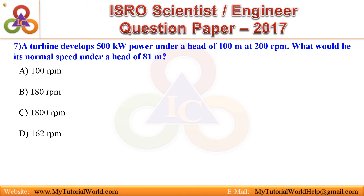Question 7. A turbine develops 500 kilowatts power under a head of 100 meters at 200 rpm. What would be its normal speed under a head of 81 meters? A. 100 rpm. B. 180 rpm. C. 1800 rpm. D. 162 rpm. Answer is: 180 rpm.